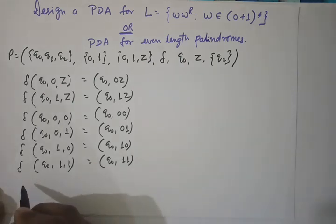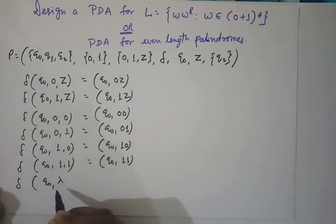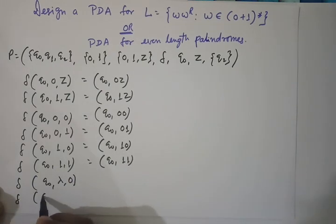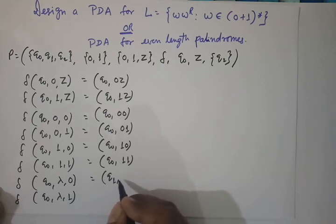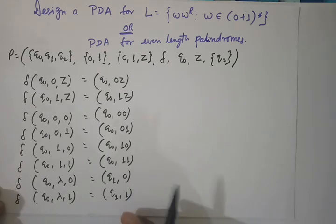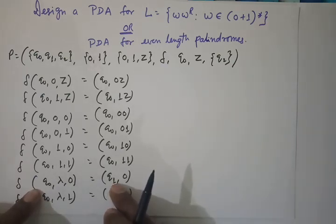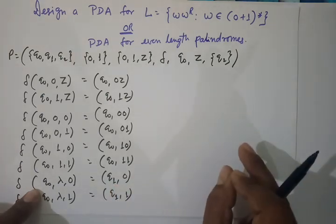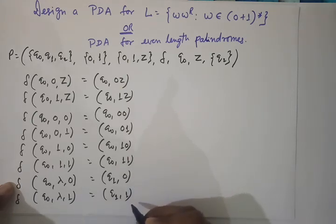Now, if we are in state Q0 and read nothing (null), with the top of the stack being either 0 or 1, we move to a new state Q1 and the top remains unchanged. What we are doing here is guessing that our middle is reached and entering state Q1. We are non-deterministically changing the state — reading nothing, null.